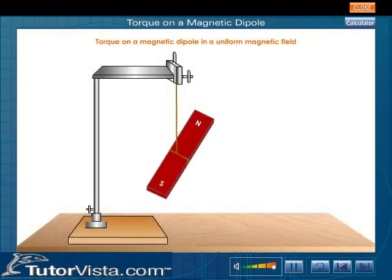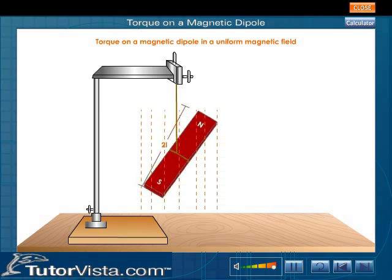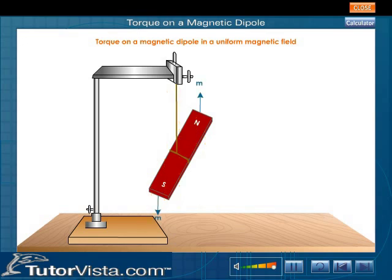Consider a Magnetic Dipole of length 2L placed in a uniform magnetic field. Let M be the pole strength of each pole of the magnetic dipole. Let the Magnetic Dipole moment Vector M make an angle θ with the direction of the magnetic field Vector B.